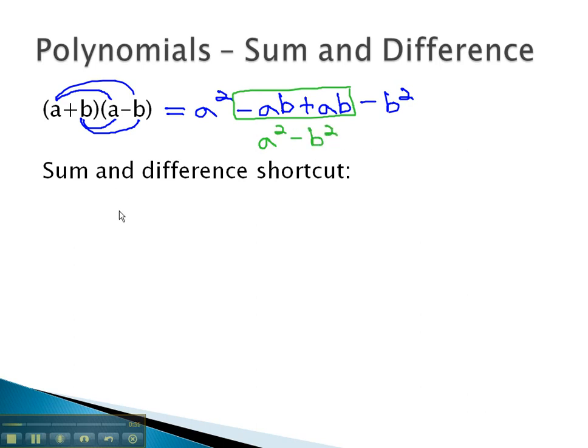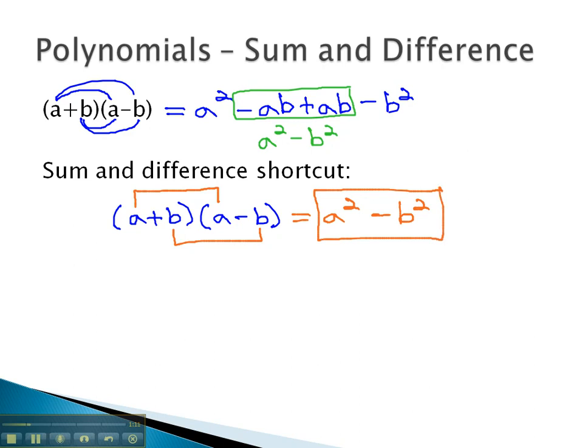This is where we get our shortcut to multiply a sum and a difference. a plus b times a minus b. Instead of going through all the steps of FOIL, we will simply multiply the first two together to get the a squared, and the last two together to get the negative b squared. We can use this shortcut because we know that the sum and difference is going to cause the middle terms to subtract out.